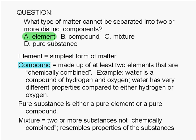A compound is made up of at least two elements, so we can separate it into at least two distinct components. The elements in a compound are said to be chemically combined. This means that the properties of a compound do not resemble those of the elements that make it up.